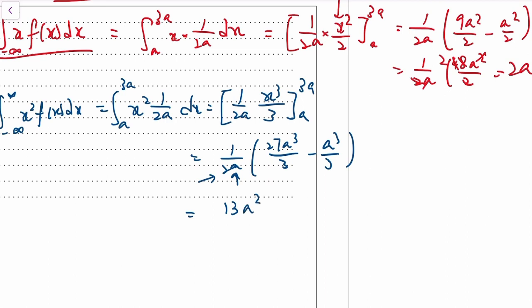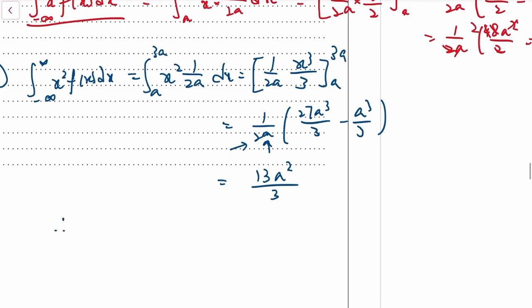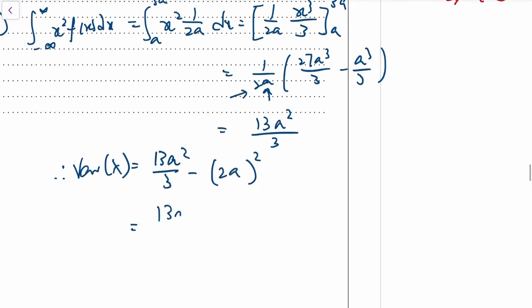So the variance is that thing minus the square of the mean, which is 4a². We need a common denominator to subtract, so it's 13a² over 3 minus 12a² over 3, so it's a² over 3.